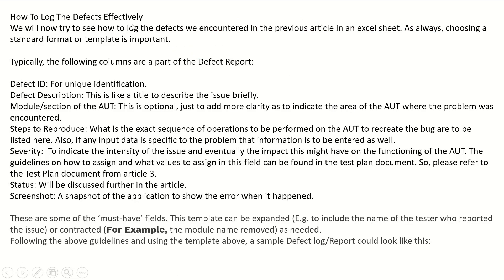How to log defects effectively — the following columns are typically part of the defect report: defect ID for unique identification, defect description as a title to describe the issue briefly, module or section of the AUT to add clarity about where the problem was encountered, steps to reproduce listing the exact sequence of operations to recreate the bug along with any specific input data, and severity to indicate the intensity of the issue and its impact on the functionality of the AUT.